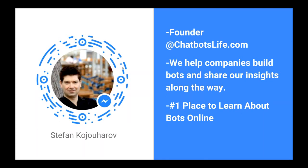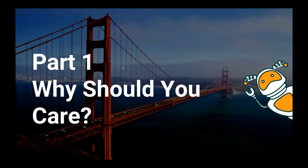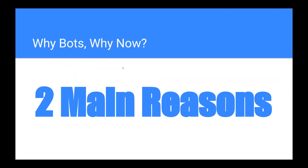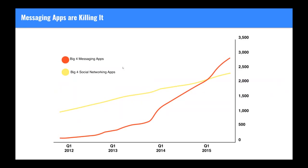Part one: why should you care? There are two main reasons why bots are a big deal right now. First, messaging apps are growing faster than social media sites were in their heyday. This means there are going to be a lot of consumers on these messaging apps who want to talk to businesses, and naturally businesses are going to want to be there.